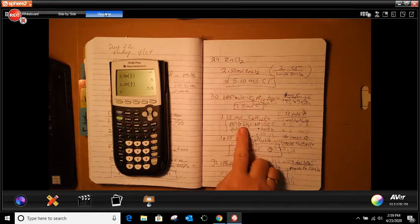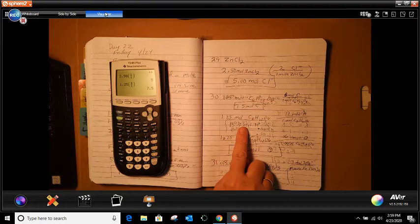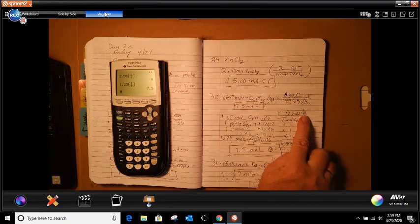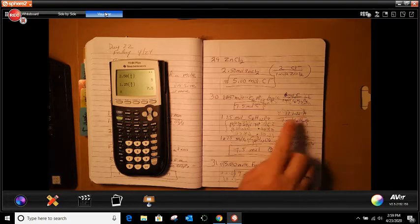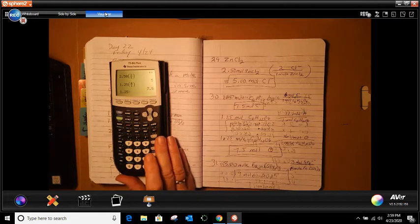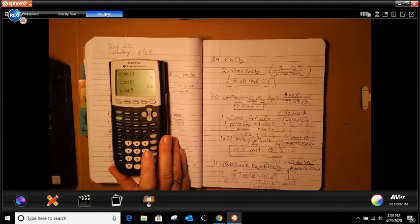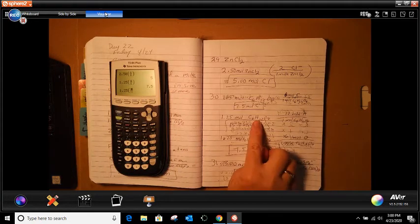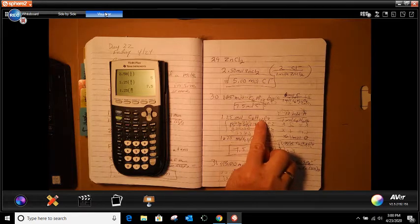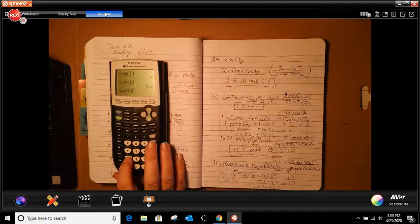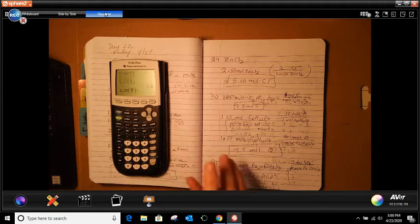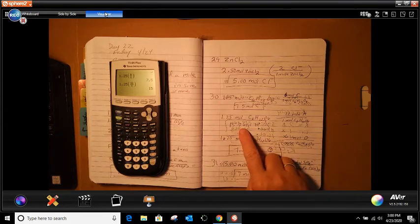The next one is 1.25 moles of C6H12O6, and we're looking just for hydrogen by itself. So to be able to do that, we're going to take our 1.25 again, we're going to open our bracket, alpha Y, enter, and this time we are looking for hydrogen, and there's 12 of them, isn't it? 12 divided by 1, close bracket, and that gives us 15 moles of hydrogen.